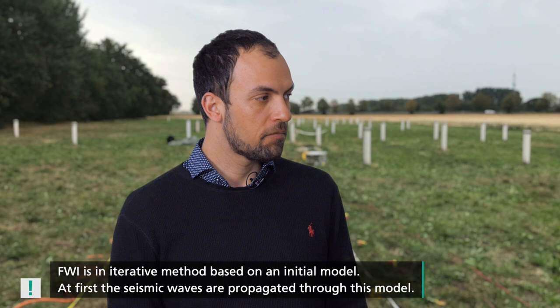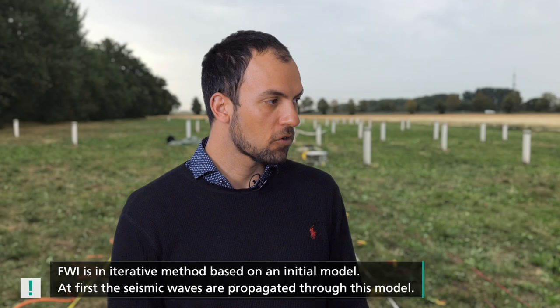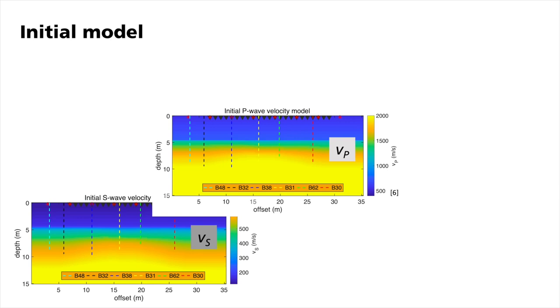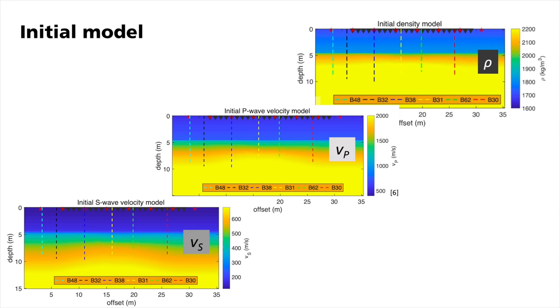FWI allows to calculate the wave propagation through this model space and to invert for the elastic properties. How did you constrain the model? FWI is an iterative method which is based on an initial model. First, seismic waves are propagated through this model. After some basic preprocessing of the raw data, we estimated initial models for the elastic parameters that we want to invert for. The initial Vp, Vs, and density models were calculated from the arrival times of the refracted waves, dispersion curve inversion, and through an empirical relationship which relates P-wave velocity and density.